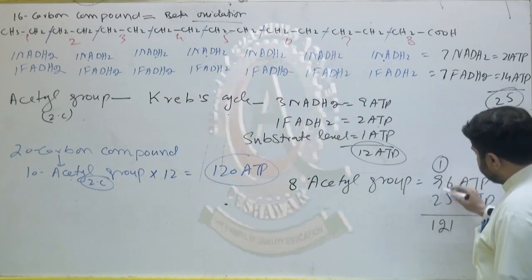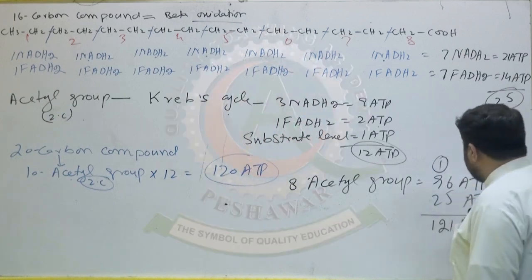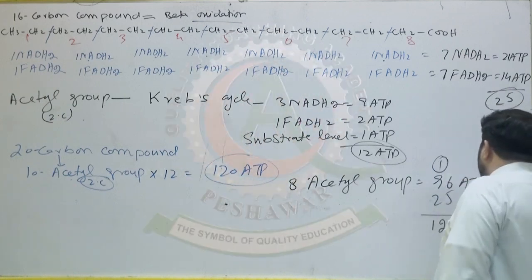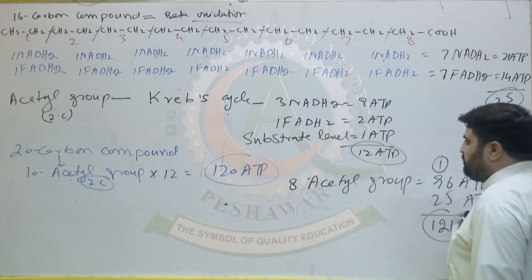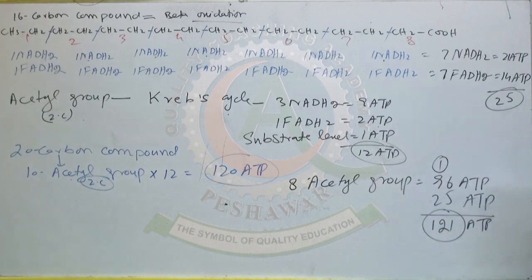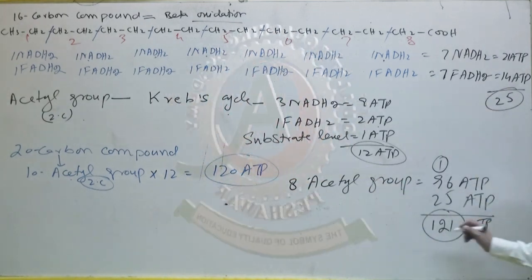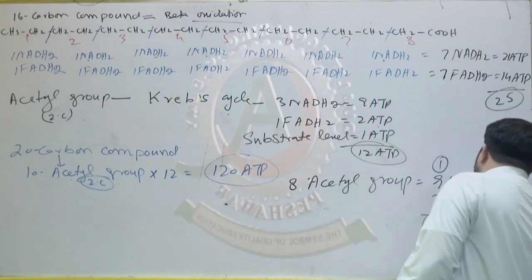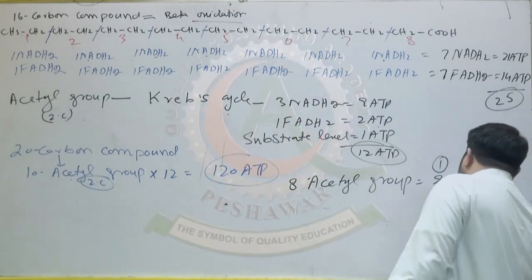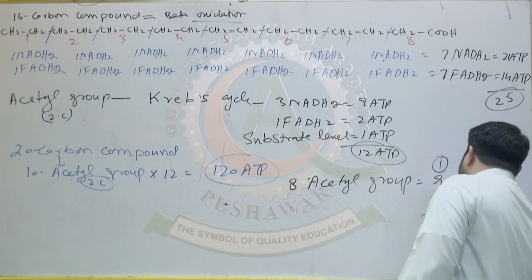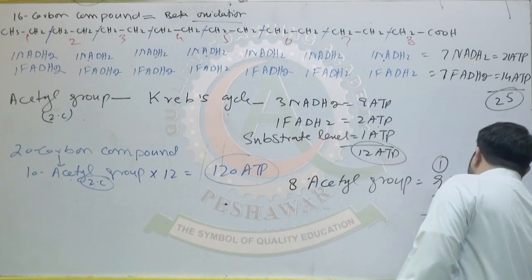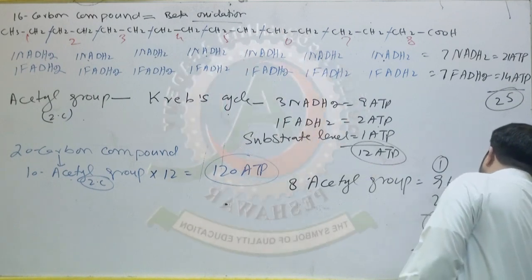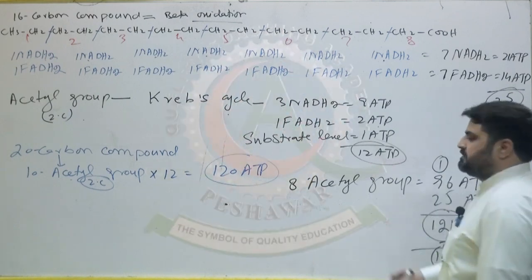So 96 plus 35 gives 131 ATP total from the 16-carbon compound through beta oxidation. However, 2 ATP are consumed to start this process, so the net ATP production is 129 ATP.